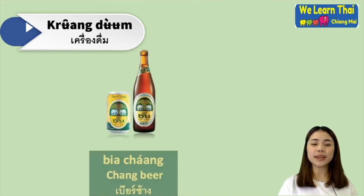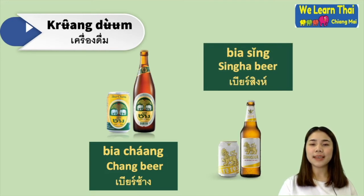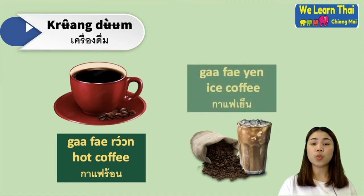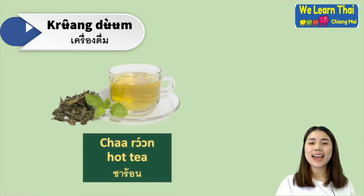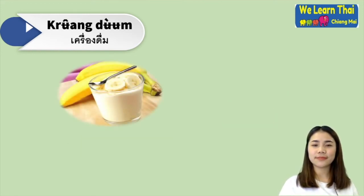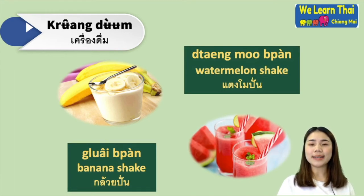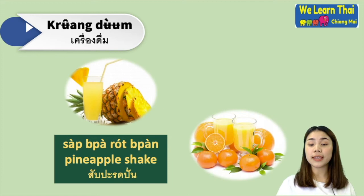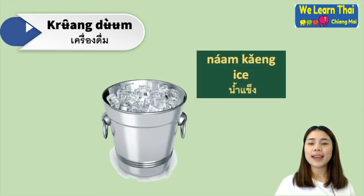And for drinks, the first one is เบียร์ — you can say เบียร์ช้าง or เบียร์สิงห์. กาแฟร้อน — hot coffee, and when you want to order iced coffee you can say กาแฟเย็น. And the next one: ชาร้อน — hot tea, or if you want iced tea you can say ชาเย็น. กล้วยปั่น — banana shake. แตงโมปั่น — watermelon shake, or สับปะรดปั่น — pineapple shake. น้ำส้ม — orange juice. น้ำแข็ง — ice.